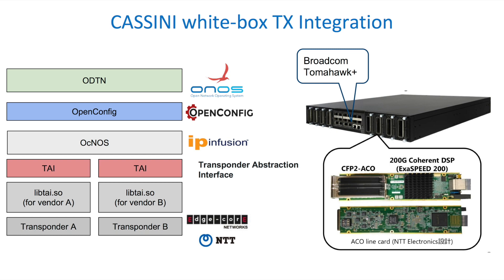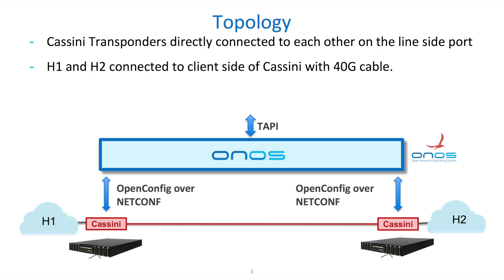As a switching chip, the Cassini box uses a Broadcom Tomahawk Plus. In this demo topology we're using two Cassini boxes with line-side ports connected back to back and two hosts connected with a 40G interface to the client-side of each Cassini box, all controlled by ONOS, which receives a transport API connectivity request and breaks it down into OpenConfig logical channel assignments to create a cross-connection inside the device between a given client-side port and the line-side port.